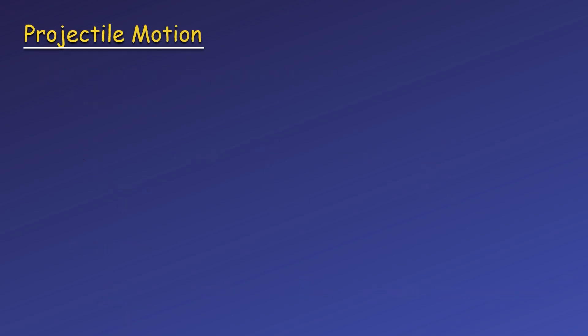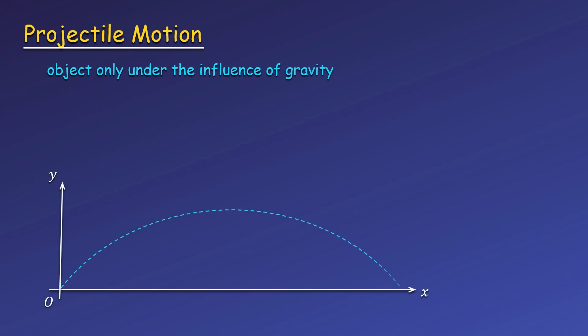Now let's look at projectile motion. An object is considered a projectile, or is in projectile motion, if it only moves under the influence of gravity. This is the same definition of an object in free fall, but now our object is moving in two dimensions. We recognize free fall as an object launched straight up, released from rest, or launched downward. If we add an initial horizontal component of velocity to all of these cases, then we get a projectile.